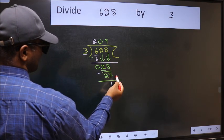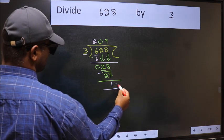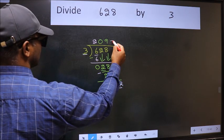No more numbers to bring down. So we stop here. This is our remainder and this is our quotient.